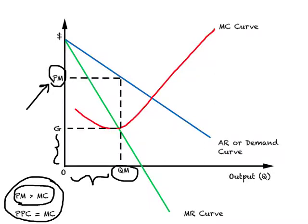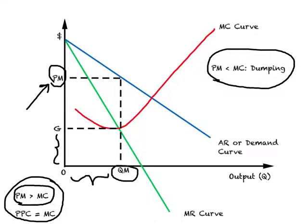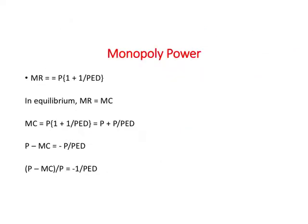If the price charged by a monopolist is less than marginal cost of production, we call this dumping. Dumping is essentially an activity done to keep competition out of the market — the monopolist charges a price lower than what it costs to produce the good.